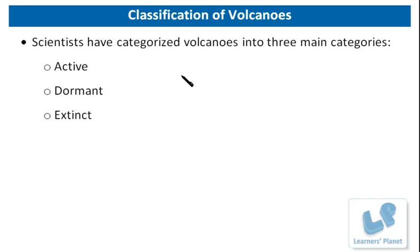That was all about the eruption, formation and occurrence of volcanoes. Now let us see the classification of volcanoes. Scientists have categorized volcanoes into three main categories: active, dormant and extinct. There are more than 1,500 active volcanoes on the earth, and we currently know of 80 or more which are under the oceans. Active volcanoes in the US are found mainly in Hawaii, Alaska, California, Oregon and Washington.